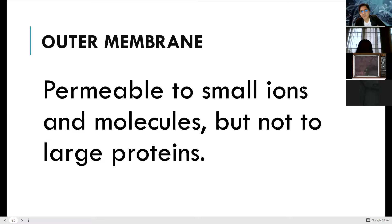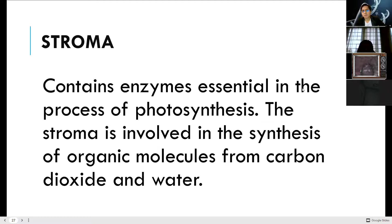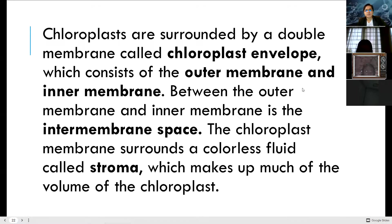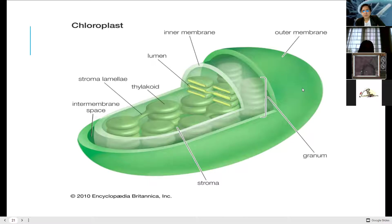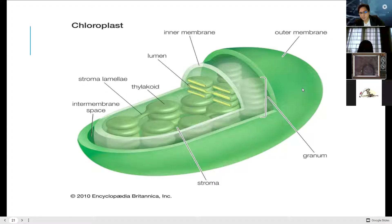The outer membrane is permeable to small ions and molecules but not to large proteins. The stroma contains enzymes essential in the process of photosynthesis. If you examine the form of the stroma, it looks like a capsule — a storage area for the thylakoid and the granum or grana.